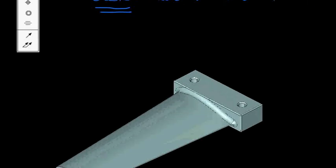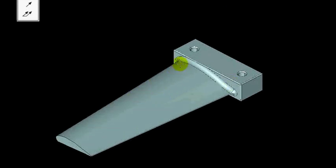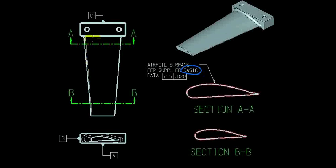Our part today is an airfoil blade. In this case the airfoil is a blade that's mounted to or attached to a mounting block. On the drawing we would see a top view of our blade, with the mounting block up here, the actual blade length, and an end view showing the tip of the blade. You can see where the root of the blade connects to the mounting block, and we have two sections cut here.